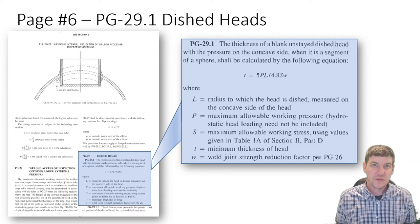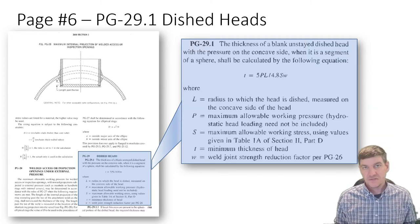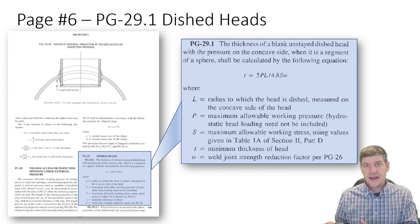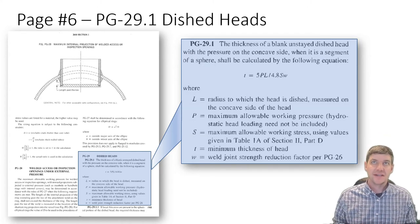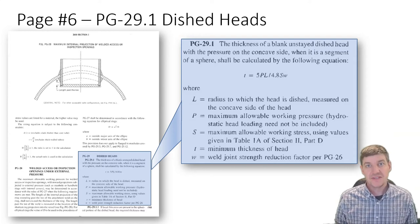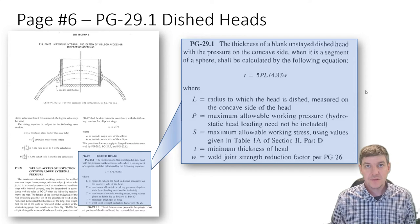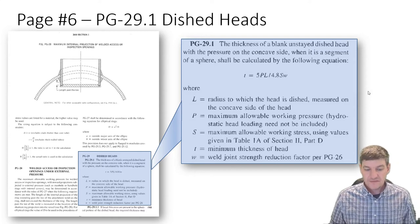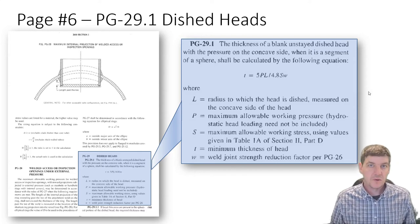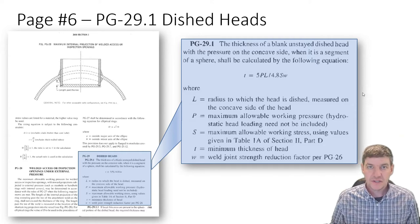The thing you should always worry about when you have an easy equation in ASME code is that there's probably lots of clauses and places where that equation can be modified. This is the case primarily when we have manholes. If we have a manhole or other access opening cut into the side, we have a bunch of clauses that come into play.